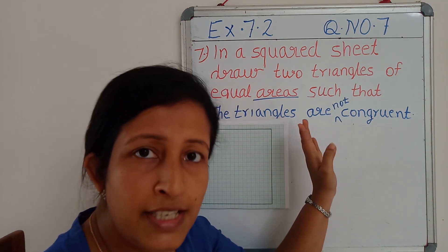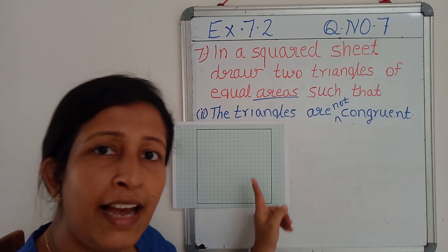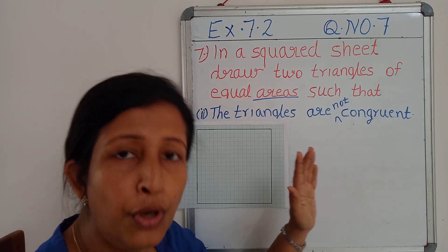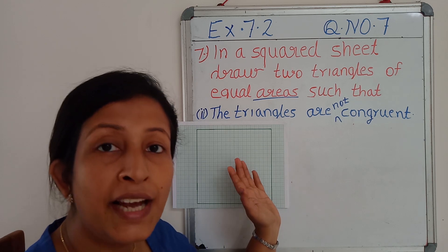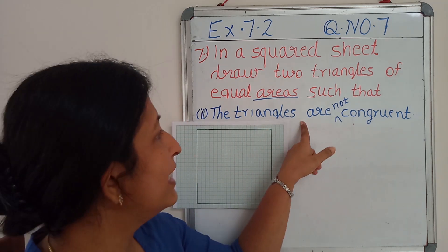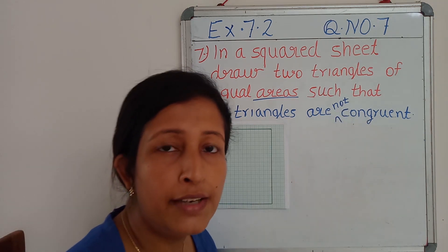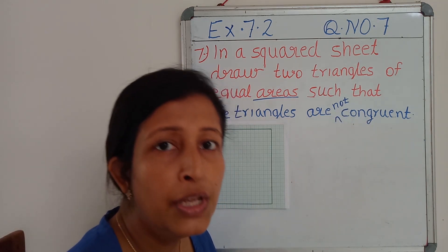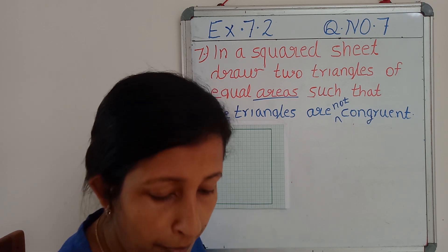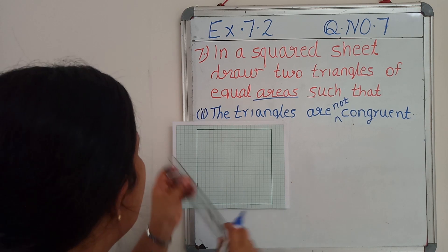We have taken a squared sheet and we should construct two triangles here and show that both the triangles have the same area, but the change is the triangles are not congruent. We should show these two triangles having the same area but they are not congruent. So for that, I am going to construct two triangles here.